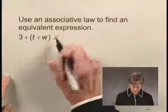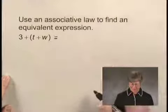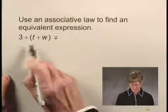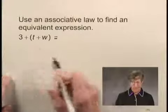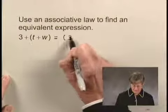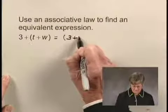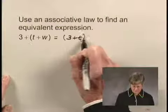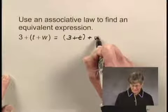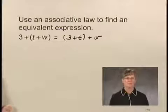So, using the associative law of addition, instead of grouping T and W, we'll group 3 and T. So, we can write this as the quantity 3 plus T, plus W.